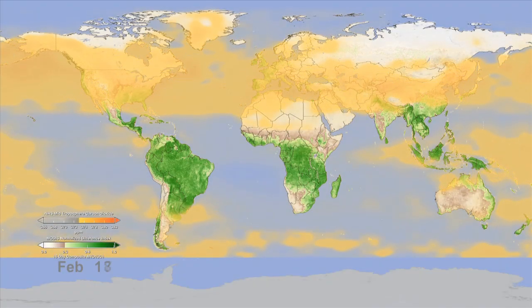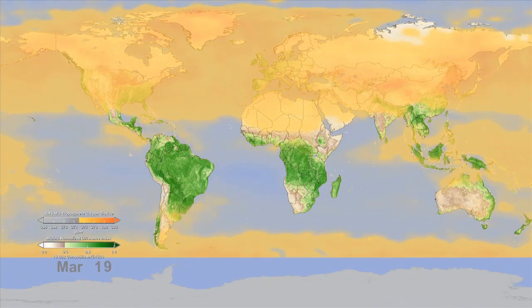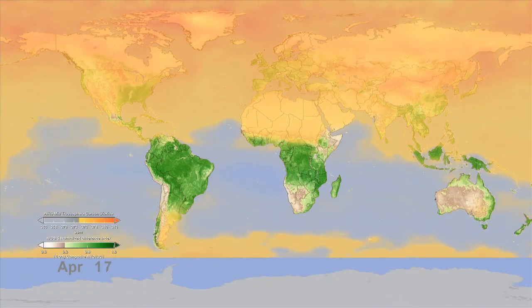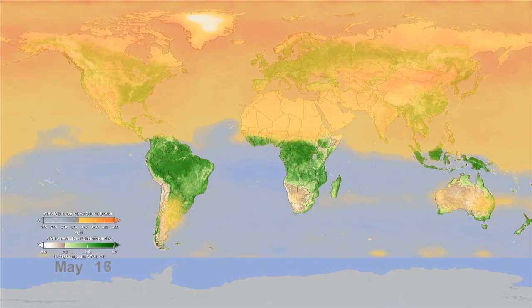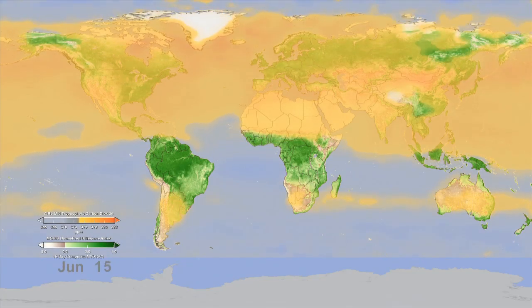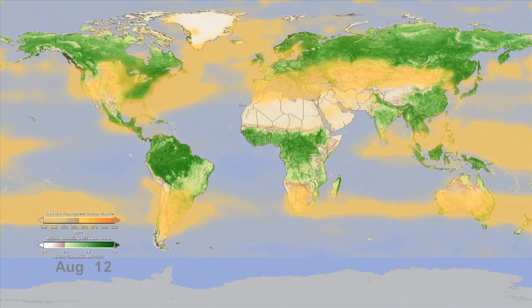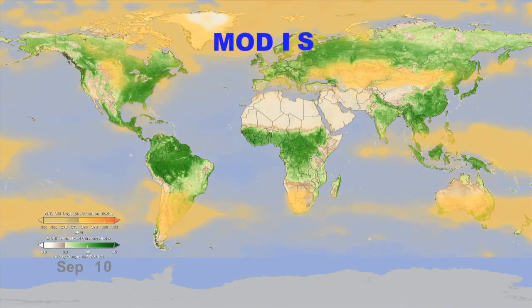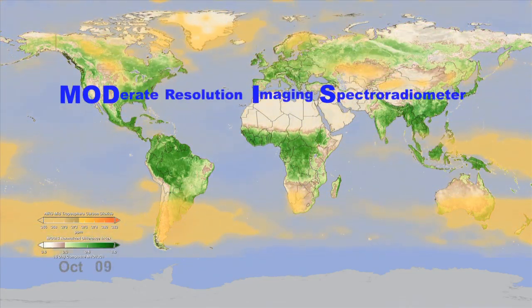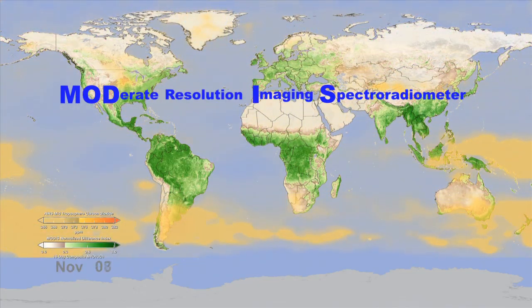In this animation, orange represents carbon dioxide as measured by AIRS. Green represents the concentration of vegetation measured by another instrument on the AQUA satellite called MODIS.